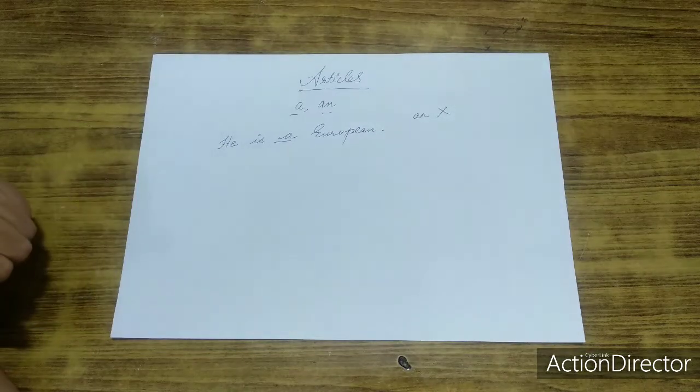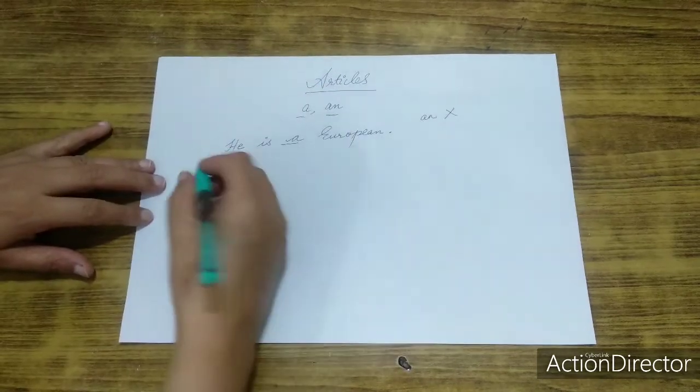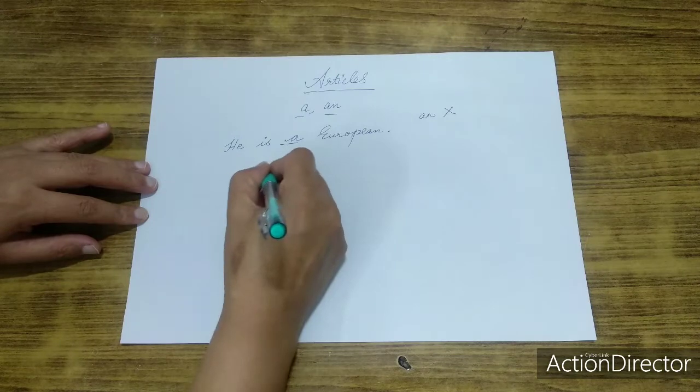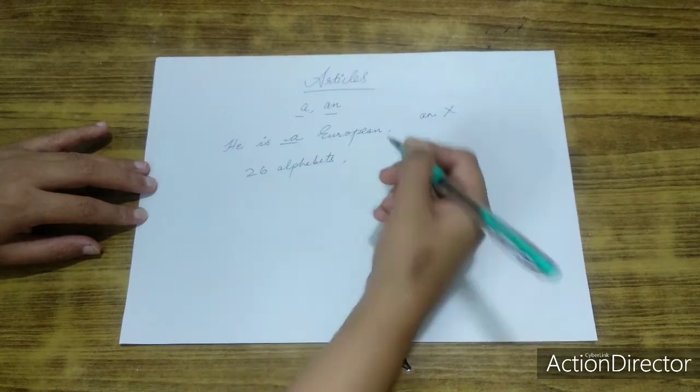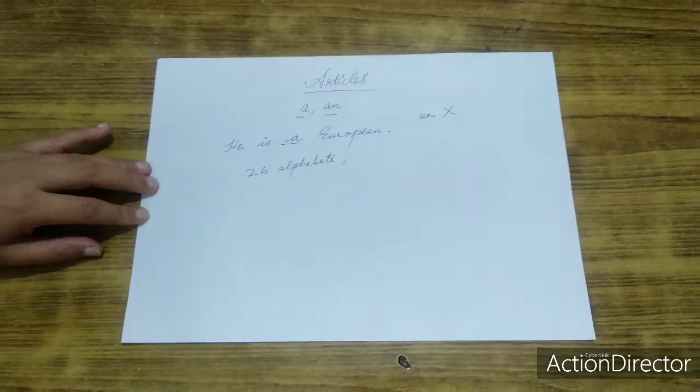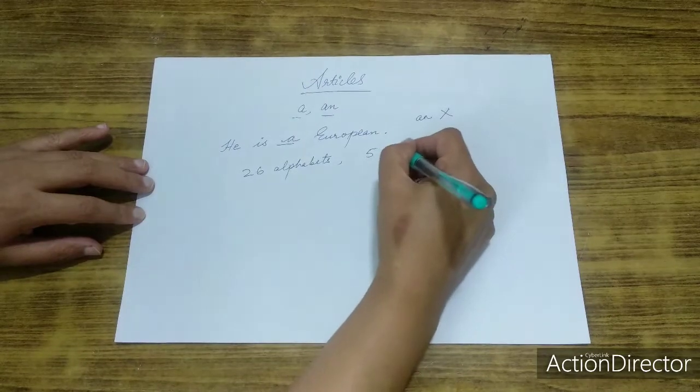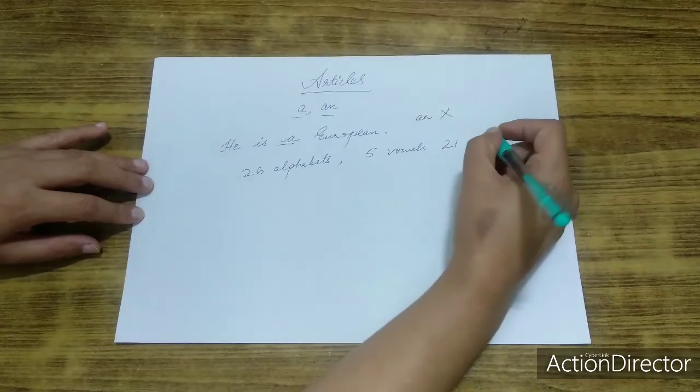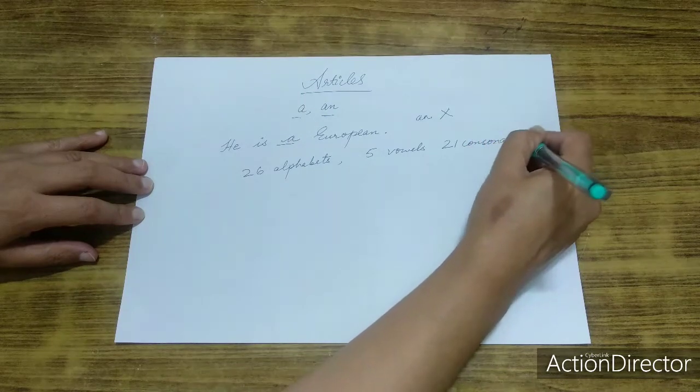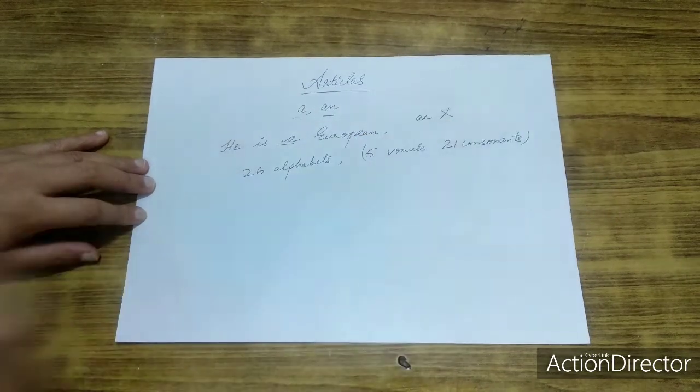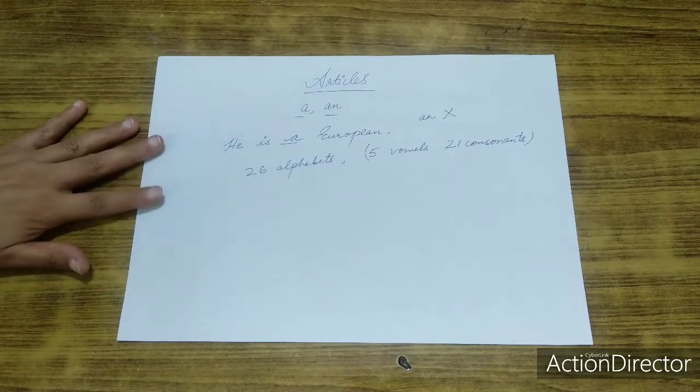When we talk about English alphabet, then what do we say? There are 26 alphabets, out of which there are how many vowels? Five vowels and 21 consonants. Okay? This is the question of alphabets.